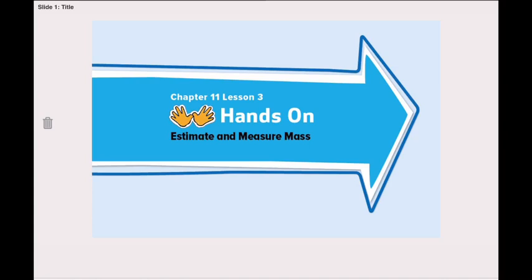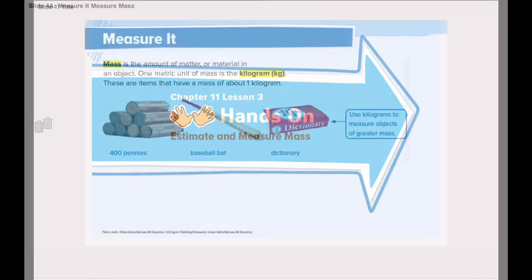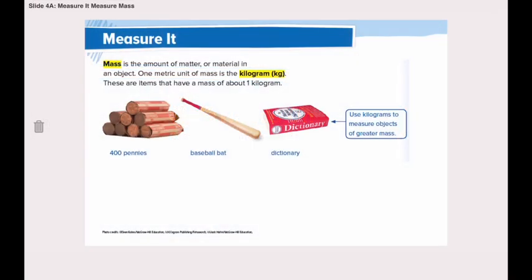Let's first understand what mass is. Mass is the amount of matter or material in an object. One metric unit of mass is the kilogram. Let's take a look at these items we have here.